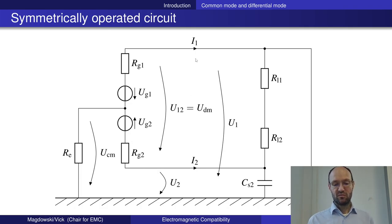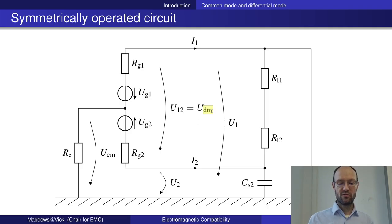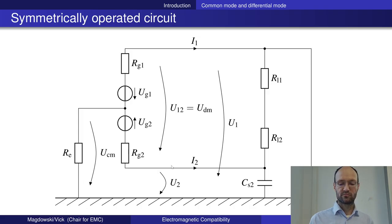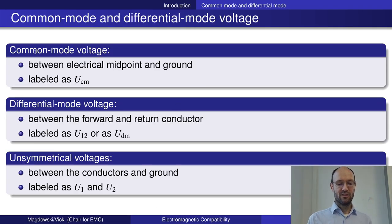Now we have different currents and different voltages. The voltage between the forward and return conductor is called differential mode voltage — this is the source for differential mode currents. The voltage between the conductors and ground is called common mode voltage — this is the source for common mode currents. You could also measure voltages between the forward conductor and ground, and between the return conductor and ground. These are called unsymmetrical voltages, which are the voltages between the conductors and ground within the circuit.